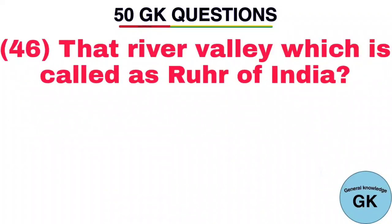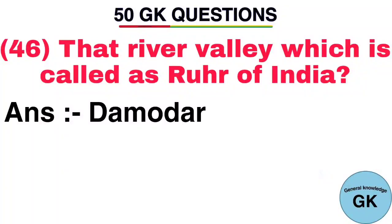Question number 46. That river valley which is called the Ruhr of India? Answer: Damodar.